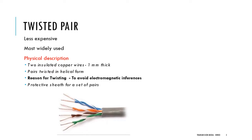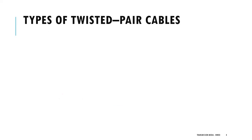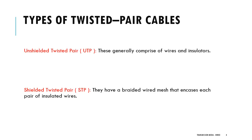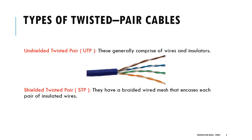A bunch of such pairs are protected using a protective sheet. Types of twisted pair cables are unshielded twisted pair and shielded twisted pair. Unshielded twisted pair generally comprises wires and insulators, whereas shielded twisted pair has a braided wire mesh that encases each pair of insulated wires.